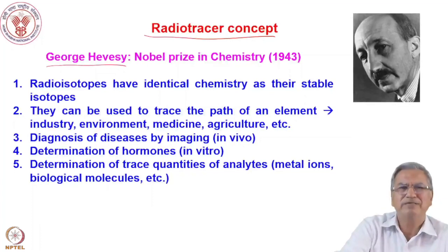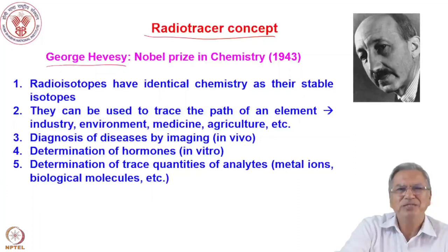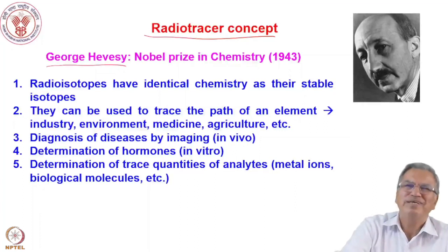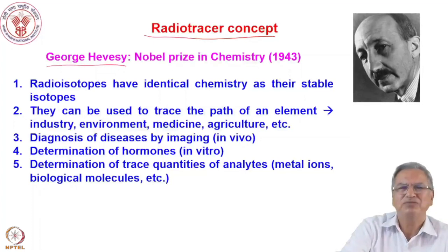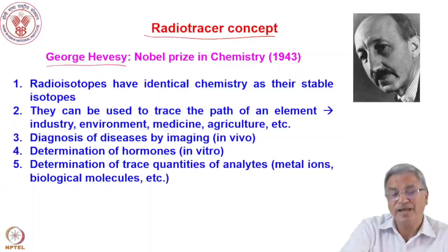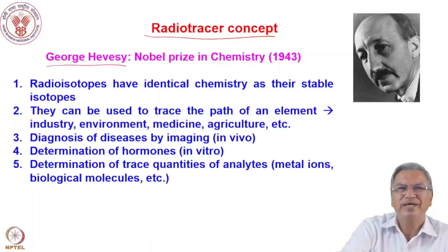Lead compounds contain lead-210, and he added it to the meals. The next day, when he was served food, he took a portion to the laboratory and counted it for beta activity. He found that lead-210 was present in those samples. Lead-210 has a 20-year supply and can be separated from the uranium series. He conclusively proved that the landlady was serving stale food to them.